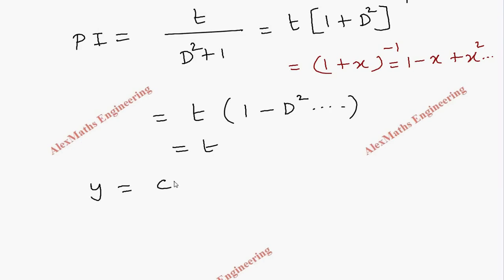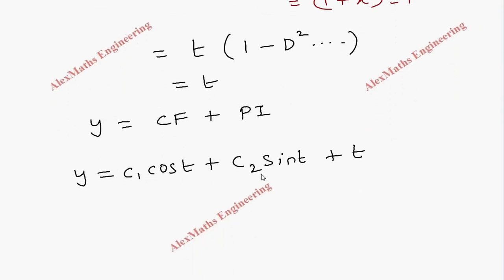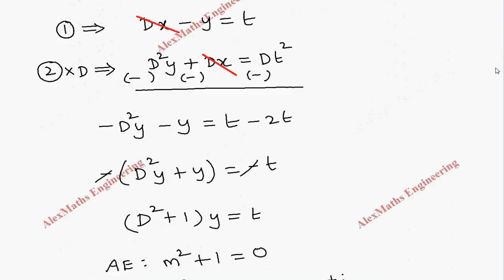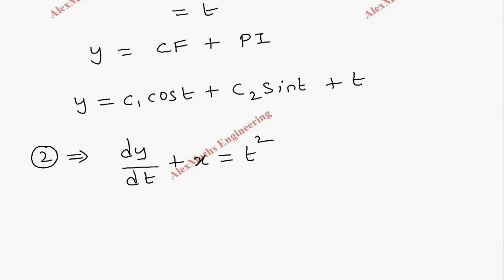Writing the complete solution, y equals CF plus PI. So y equals c1·cos(t) plus c2·sin(t) plus t. That is one solution, y in terms of the constants. Now let's find x. We need dy/dt, so it is better to use the second equation, which is dy/dt plus x equal to t squared.